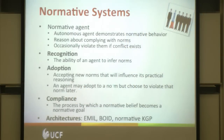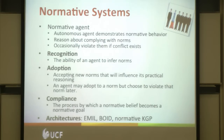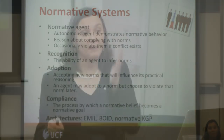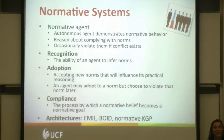Usually three phases occur in normative systems. First, a recognition state where the agent infers the existence of norms while observing what other agents do. Second, an adoption phase where the agent tries out different behaviors without a lifelong commitment — it can adopt a norm but choose to violate later. Third, compliance, a firmer process where adoption moves to belief and becomes a goal — part of the agent's priorities. Examples include Emile, Boyd, and normative KGB architectures in this area.